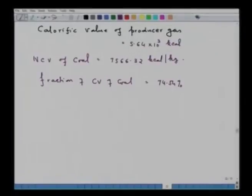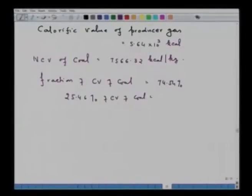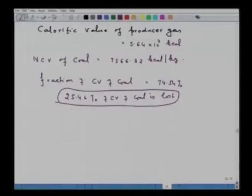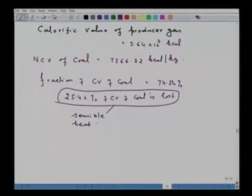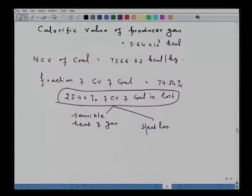This means 25.46% of the calorific value of coal is lost — an important analysis result. These losses can be of several natures: sensible heat of the producer gas (discharged at some temperature) and heat losses from the gasifier. This analysis helps locate areas and take effective measures to conserve heat. That is how material balance is performed.